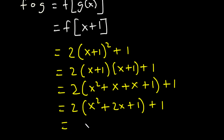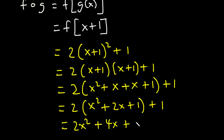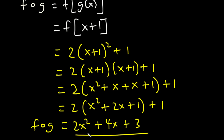Now distribute the 2: 2 times x² is 2x², 2 times 2x is 4x, and 2 times 1 is 2, plus 1, so 2 + 1 is 3. So we have f(g(x)) = 2x² + 4x + 3.